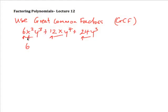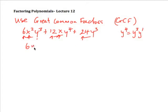Now we look at the variables. We have x², x to the power of 1, and no x in the third term, so x is not a common factor. Looking at y: we have y³, y⁴, and y³. Since y⁴ = y³ · y, there is a y³ in each term, so y³ is a common factor.